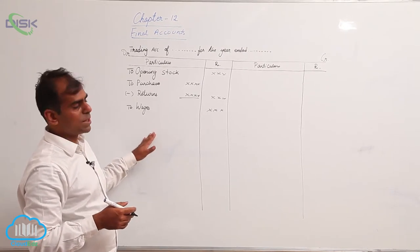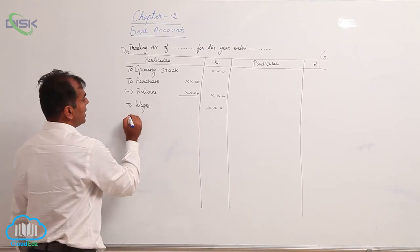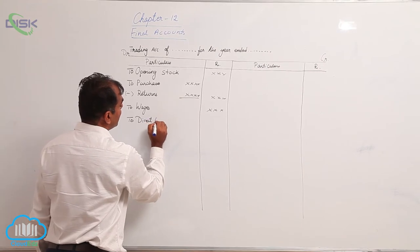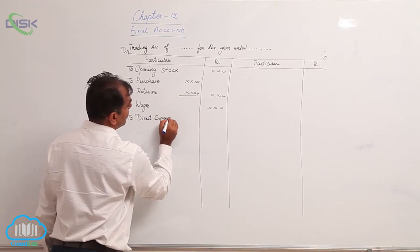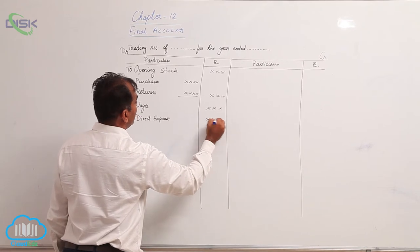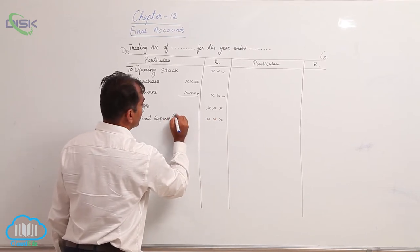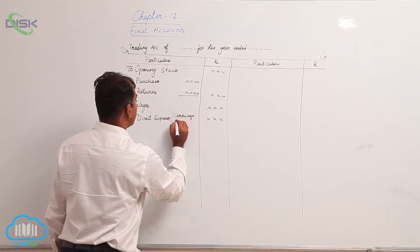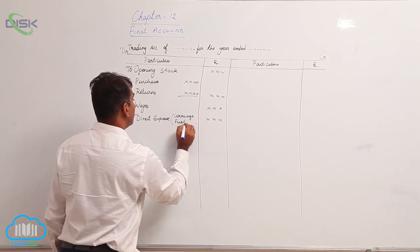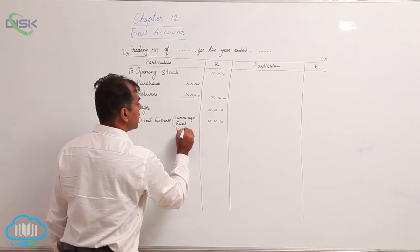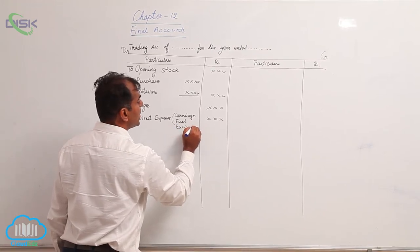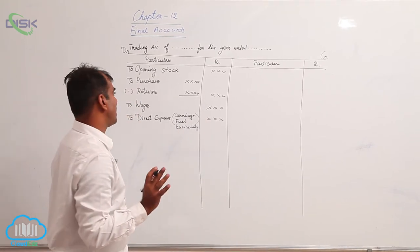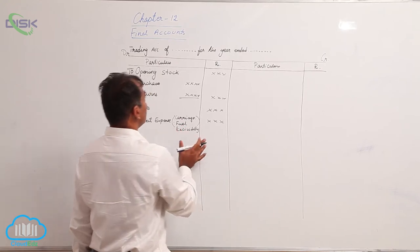Then there would be some direct expenses. I will give you the list of direct expenses separately. Some examples would be carriage, fuel, excise duty, etc. These are a few examples. All the other examples I'll list out separately. This minimum is there on the debit side.